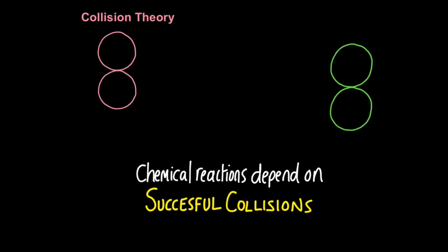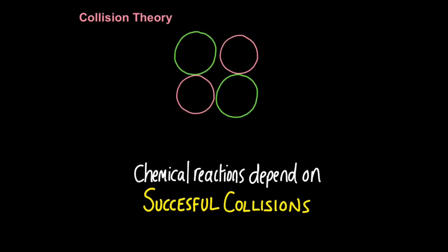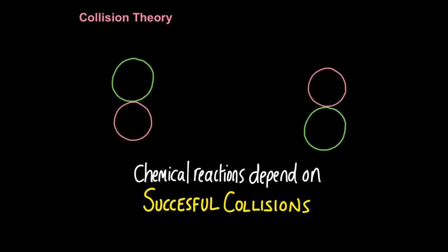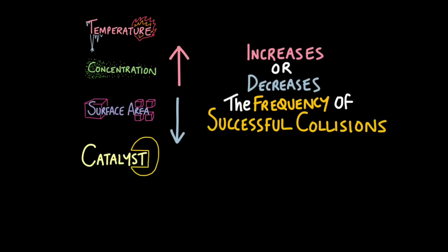Here we have two reacting molecules — the reactants — coming together to successfully collide. The reaction takes place and we form the products. Remember chemical reactions depend on successful collisions, not just any collisions — successful ones. The key idea is that all these factors affect the frequency of successful collisions: how often these collisions occur. If you increase these factors they increase the frequency of successful collisions; if you decrease them they will decrease the frequency of successful collisions.